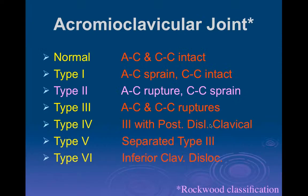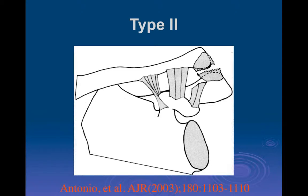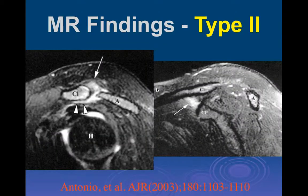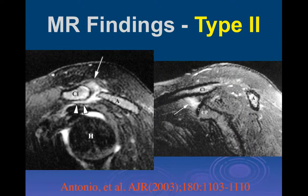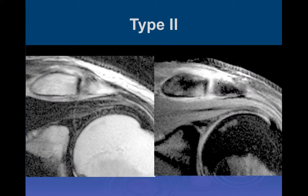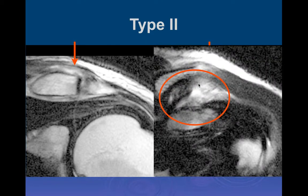Type 2 involves rupture of the acromioclavicular joint capsule and ligaments with sprain of the CC ligaments. There may be slight separation, usually less than a centimeter. On MRI you see abnormal signal involving the capsule and edema in the area of the CC ligaments — with the trapezoid portion showing edema while the conoid is more normal, consistent with a CC ligament sprain. Another type 2 case shows a 13-year-old male with sports injury, with edema surrounding the distal clavicle, fluid with a separated AC joint, and abnormal signal in the CC ligaments.